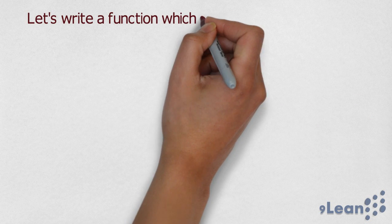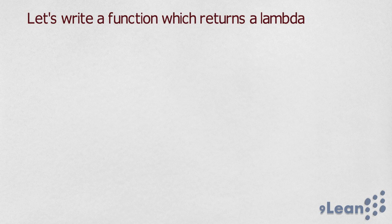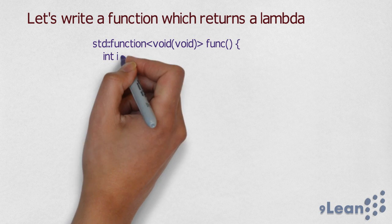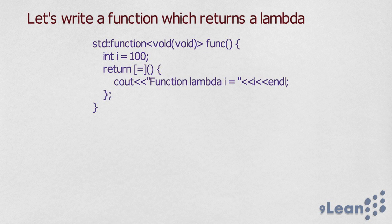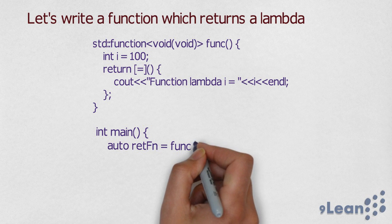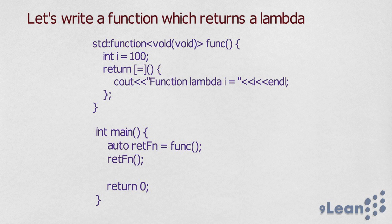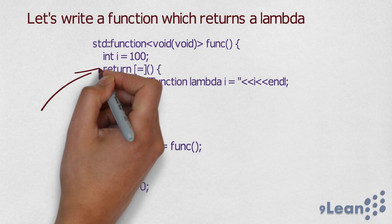So to understand, let's write a function which returns a lambda. Here I am writing a function called func which returns a lambda and a main function which calls this function and actually calls the lambda returned by the function.